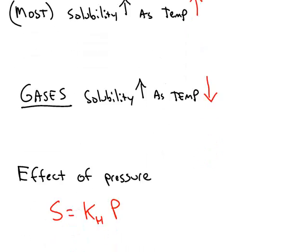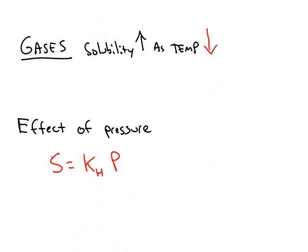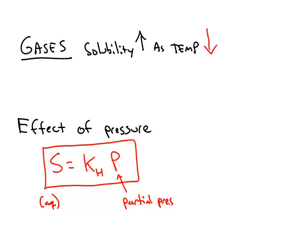Gases are also affected by pressure. You have this formula where S is the solubility of the gas dissolved in solution, Kh is a constant, the Henry's Law constant, and P stands for the partial pressure of the gas.